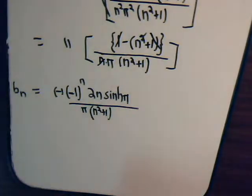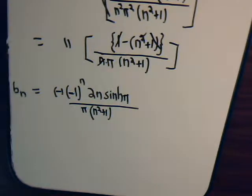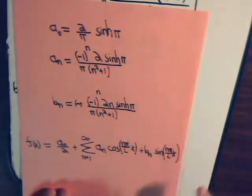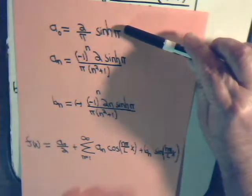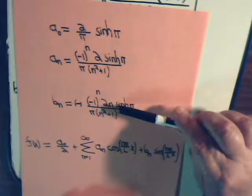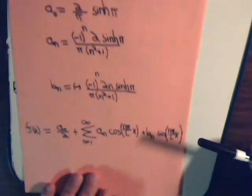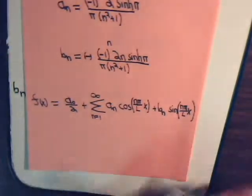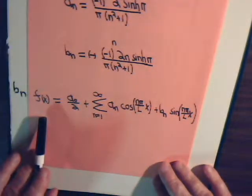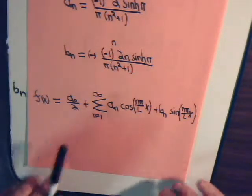Hopefully that didn't take too long, but that's the nature of these types of problems. Right now we have determined a naught, a sub n, and b sub n, and here is our Fourier expansion formula. Now let's put all the pieces together.